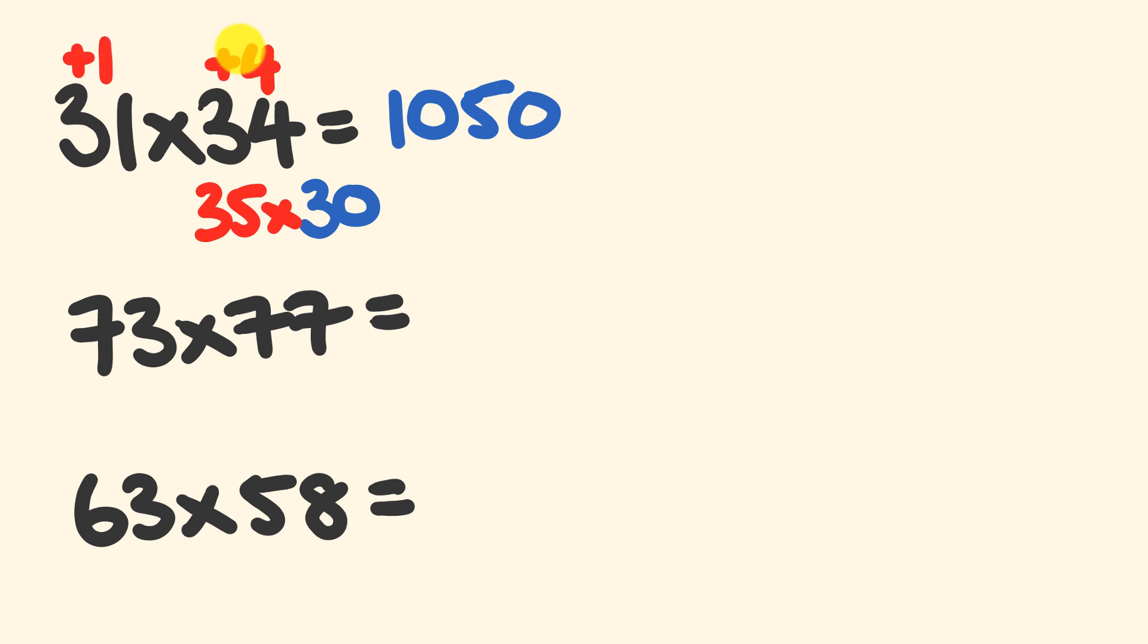The next part of our answer, we're going to get by multiplying 1 times 4. 1 times 4 is equal to 4. Well, it's positive 4, so we're going to add it on. Our answer is 1054. How did you go with that? Okay, cool.